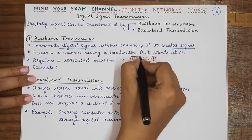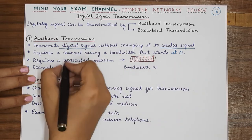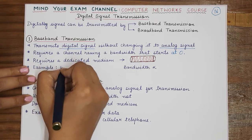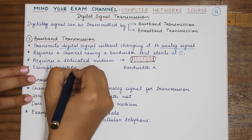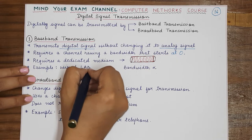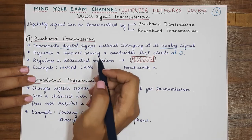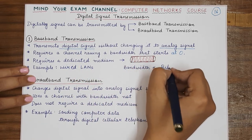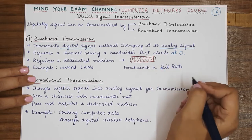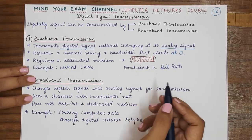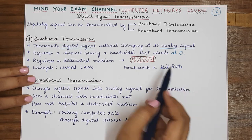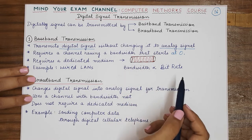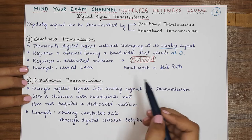An example of baseband transmission is the wired LANs that we use in our homes and in our professional lives. Wired local area networks use baseband transmission. In baseband transmission, the bandwidth is directly proportional to the bit rate — if you want to increase the bit rate, you will have to increase the bandwidth as well.